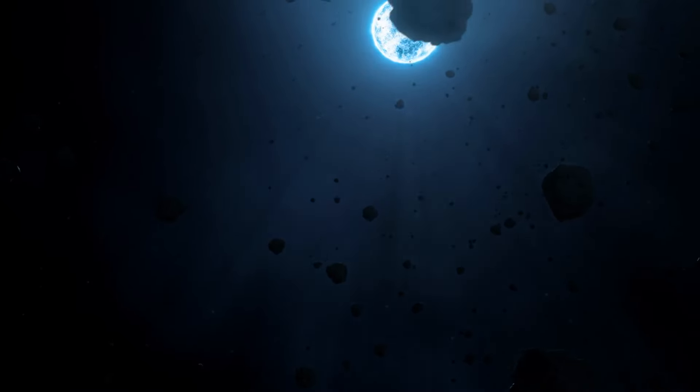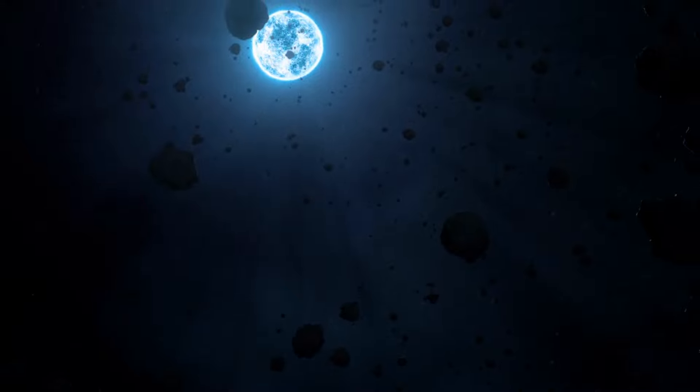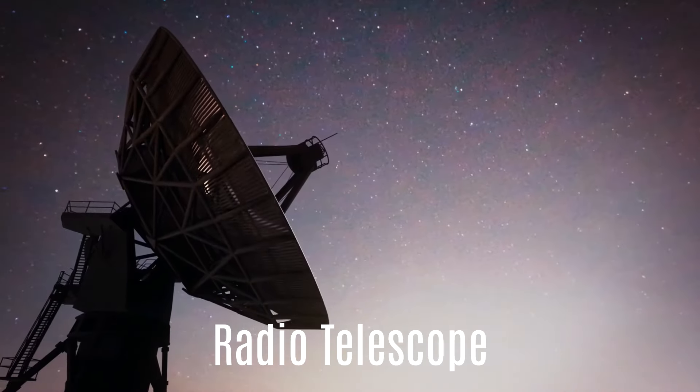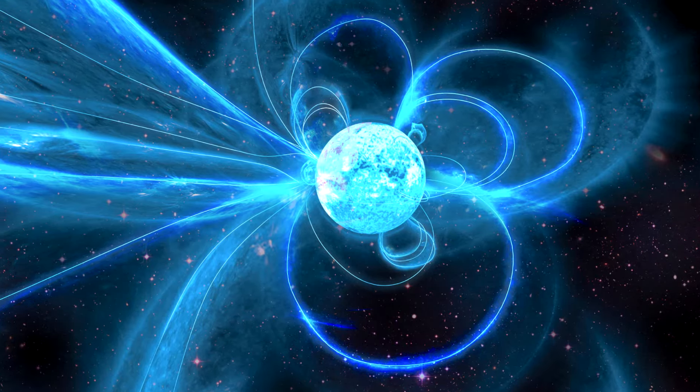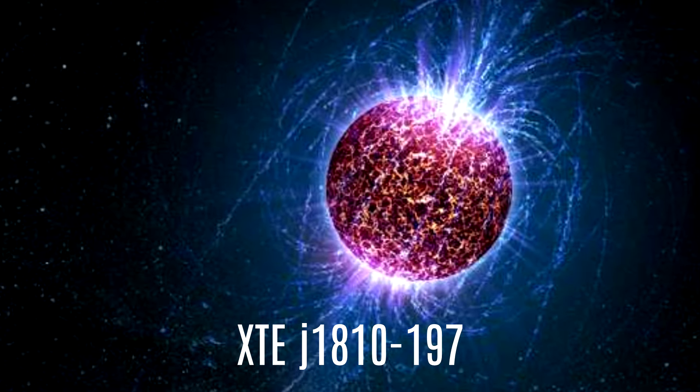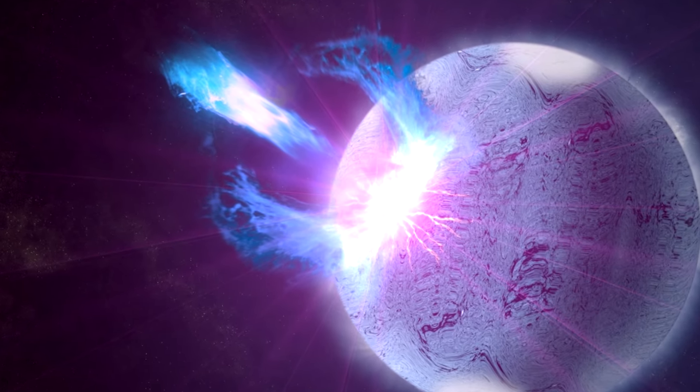Something really surprising just happened. Scientists found out that a star they thought was dead is actually showing signs of life again. They used a special tool called a radio telescope to detect strange signals coming from it. This star, called XTJ-1800-10197, is super strong and has one of the most powerful magnetic fields in the universe.